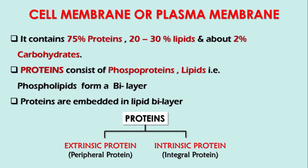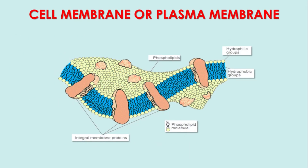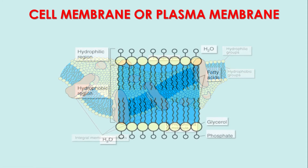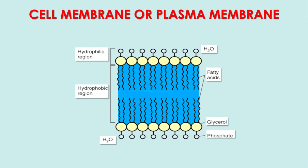Extrinsic proteins are on the surface of the layer, while intrinsic proteins are embedded within the cell membrane — that is why they are called peripheral and integral proteins, respectively. Here you can see the phospholipid bilayer with extrinsic and integral proteins embedded in it. This is the ideal structure of the cytoplasmic membrane.